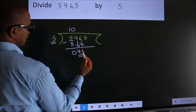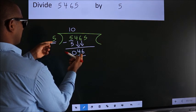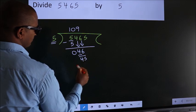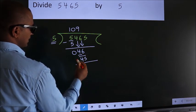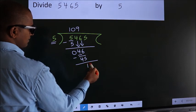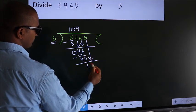So, 46. A number close to 46 in 5 table is 5 nines, 45. Now we subtract. We get 1. After this, bring down the beside number. So, 5 down.